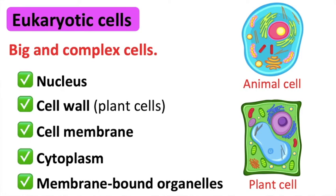Animals and plants are examples of eukaryotes. Eukaryotes can be unicellular or multicellular organisms.